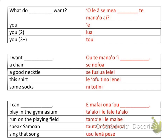Some things you might be able to say: I can play in the gymnasium — 'e mafai ona ta'alo i le fale ta'alo'; I can run on the playing field — 'e mafai ona tamo'e i le malae'; or 'e mafai ona ta'utala faa-Samoa'; or 'e mafai ona usu le pese.'